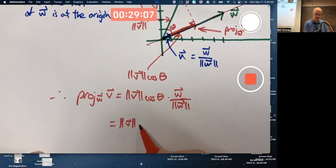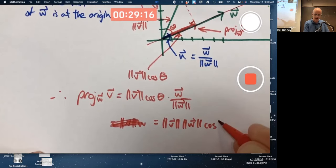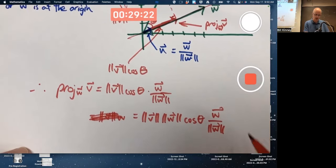And write the length of V times the length of W times the cosine of the angle times the vector W over its magnitude, its length, squared.